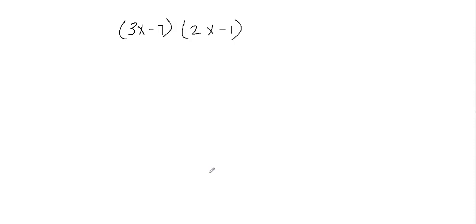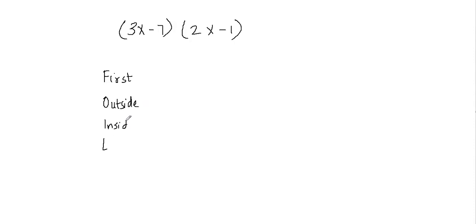Hi, in this video we'll learn how to multiply binomials using the FOIL method. FOIL stands for F-O-I-L, where F stands for first, O stands for outside, I stands for inside, and L represents last terms. Basically, FOIL is referring to the order of multiplying the terms.